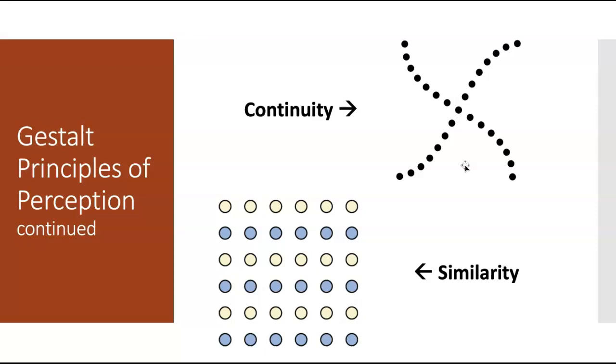And then the principle of similarity is the idea that things that are alike tend to be grouped together. So when looking at these dots, we are likely to perceive alternating rows of color rather than just random individual lines. We'll see them as blue lines grouped together and yellow lines alternating.